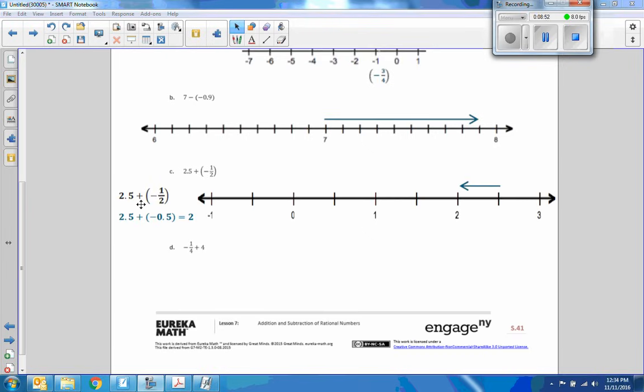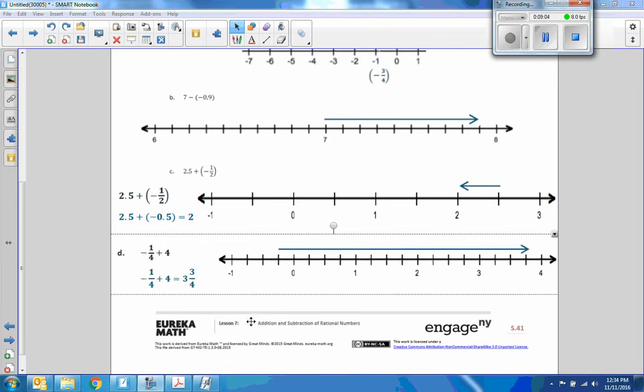Here we have 2.5 plus a negative a half. So we start at 2.5. If you go to the left one-half, that ends up at two. Finally, D. Negative one-quarter plus four. We start at negative one-fourth. This scale is in quarters. Zero, one-quarter, two-quarter, three-quarters, four-quarters is one. And repeat. So if we go from negative one-quarter and we go to the right four, we end up at three and three-quarters. That one might have been a little tricky.